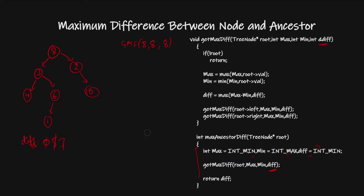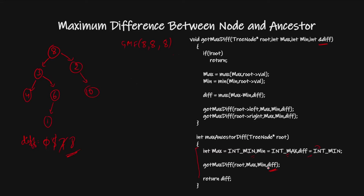Now I go to the right child of the root. In this path, my maximum is 8 and minimum resets to 8. I update minimum to 2, so the difference is 8 minus 2 = 6, which does not update the current maximum difference of 7. Then I go to its right child, which is 10. The current maximum is updated to 10 and minimum remains 2. So 10 minus 2 = 8, and the difference is updated to 8. All nodes are done, and since I passed difference by reference, I finally return this difference of 8.